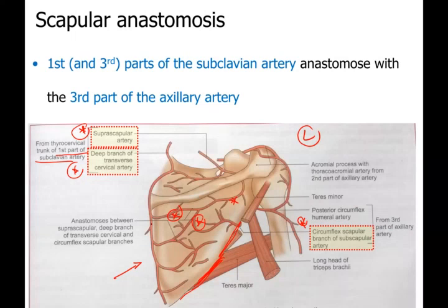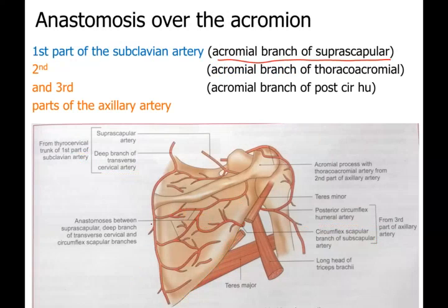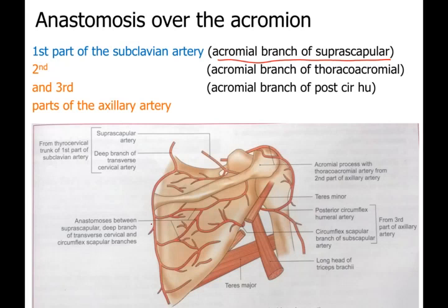Remember that both in the upper and lower limb there are two or three important anastomoses - like the scapular anastomosis in the upper limb and the trochanteric and cruciate anastomoses in the lower limb. But that doesn't mean those are the only anastomoses. Around all joints - elbow, wrist, knee, ankle - there is some sort of anastomosis, though we don't question those in detail.